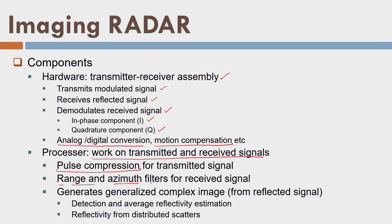The processor also has range and azimuth filters for the received signals. Then it generates a complex image from the received signal. This signal is used for detection as well as estimation of average reflectivity, and we also find out the reflectivity from various distributed scatterers.